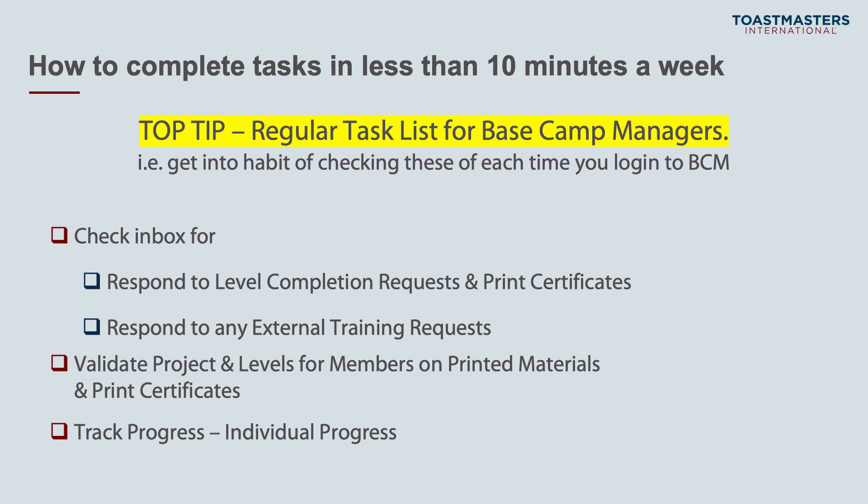That's the four tasks, and here's the top tip for completing all those tasks in less than 10 minutes a week. I'd recommend going into Basecamp Manager usually just after the meeting. First, go to your inbox and check for any entries to process — level completion requests, print certificates, and any external training requests. If anyone in your club is on printed materials and completed projects this week or fortnight, manually progress them in Basecamp. Finally, go into the individual report and print it out so you have a week-by-week comparison.